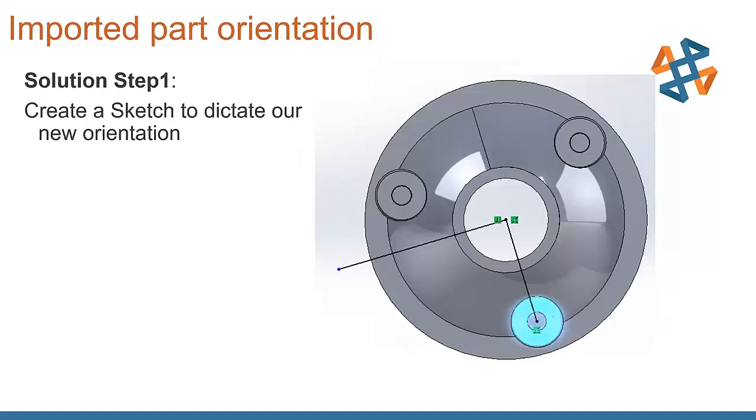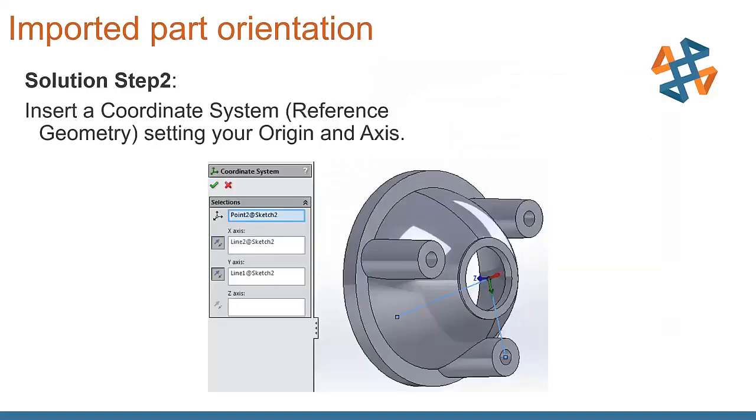The solution is pretty simple for this. By the highlighted face there, we created a new sketch on a flat face that we decided to dictate our new orientation. That's what that sketch is going to do for us. We then turn around and insert a coordinate system. This is found in the reference geometry dropdown. And you want to make sure you set your origin and axes.